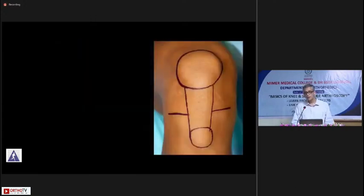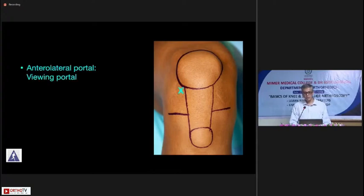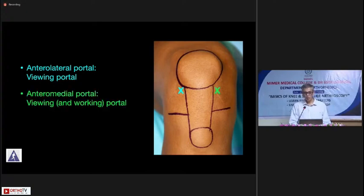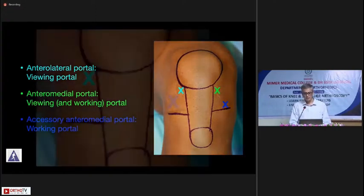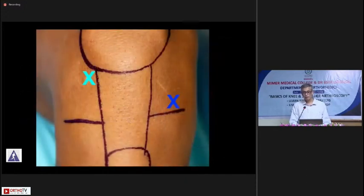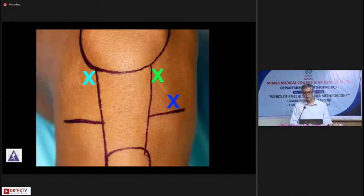For ACL surgery, I use three portals. The anterolateral portal, which should be placed high as Dr. Abhay explained, will be the predominant viewing portal. The anteromedial portal will be both a viewing and working portal. And the accessory anteromedial portal will be my predominant working portal. The anteromedial portal is made outside-in using a simple 18-gauge needle — placed too low it causes crowding of instruments.